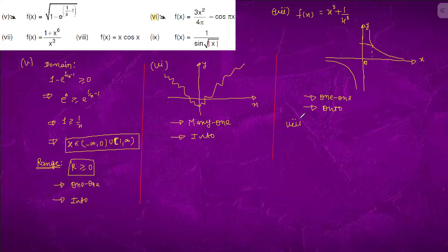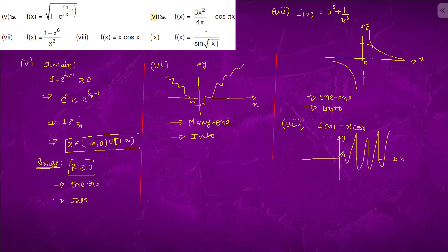Question number 8. We have f(x) equals x·cos(x). The curve looks like this — it oscillates. We can clearly say that this function is many-one. And it is onto because it will go to positive infinity as well as negative infinity.